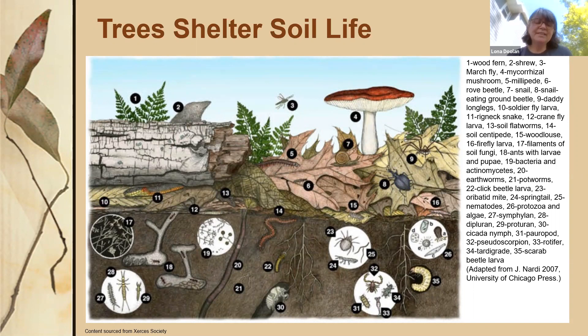Fungi and bacteria translocate nutrients within the soil litter system, which increases soil fertility and improves soil structure. This nutrient cycle intensifies in decaying trees — nitrogen-fixing bacteria increase the nitrogen level in decaying wood, and nitrogen, calcium, and magnesium all accumulate in decaying wood.